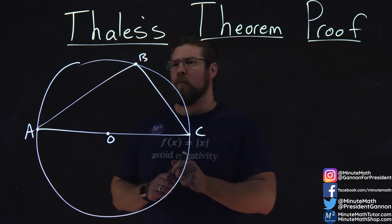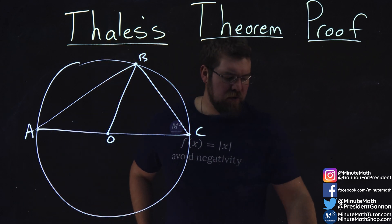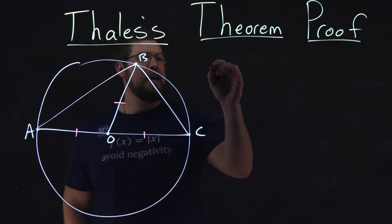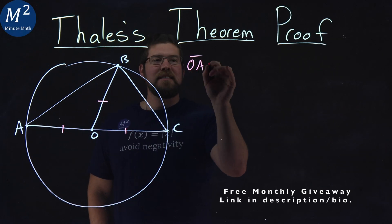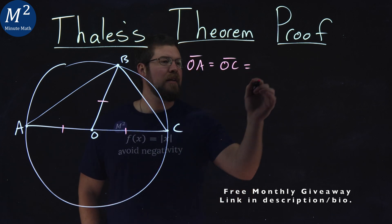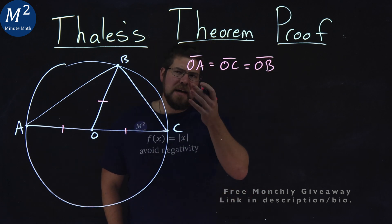If I add another line here as well, from B to O, that is also congruent, that is also the radius. So we have here that OA is equal to OC, which is also equal to the length of OB. And what does that tell us?